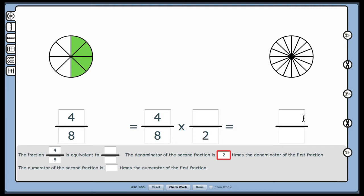For example, 2 over 2 or 2 halves is another way to express 1. I type the 2 in the sentence.